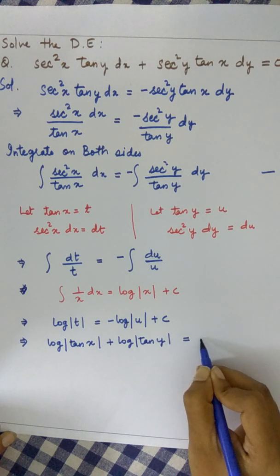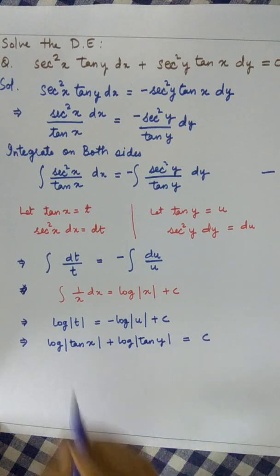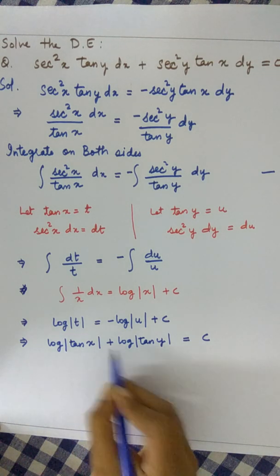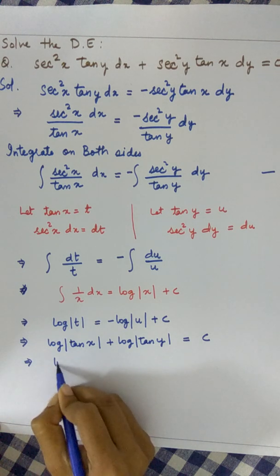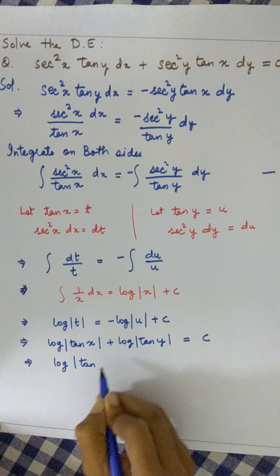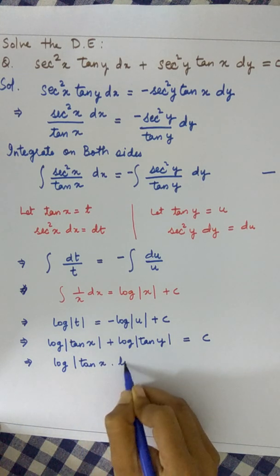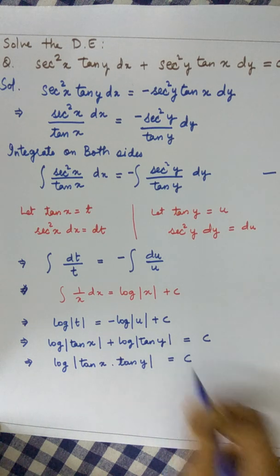Now we know that when two log terms are added, they combine by multiplication. So this becomes tan x times tan y equals c.